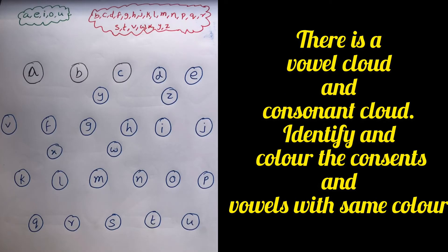And for the third worksheet, there are some consonants and vowels that are there randomly in the below box. And I've placed two clouds on the top where all the vowels are specified in one color and consonants are specified in other color cloud. So the kid needs to identify them and color them exactly the same.